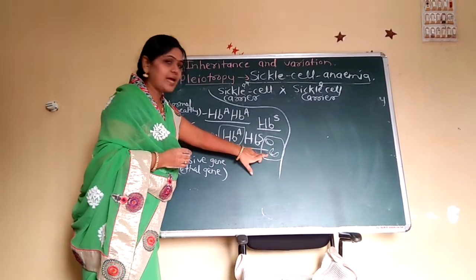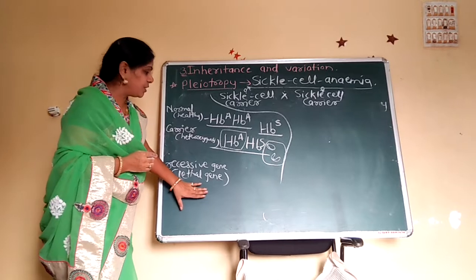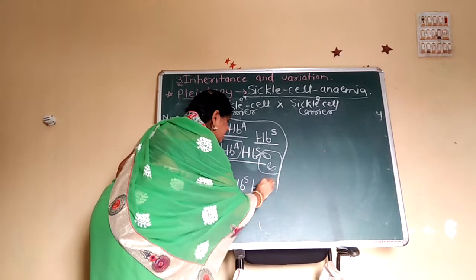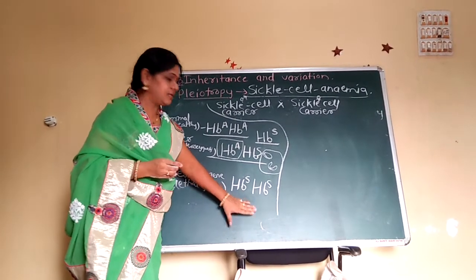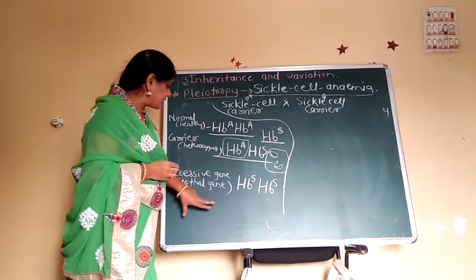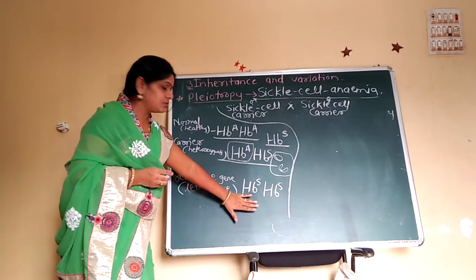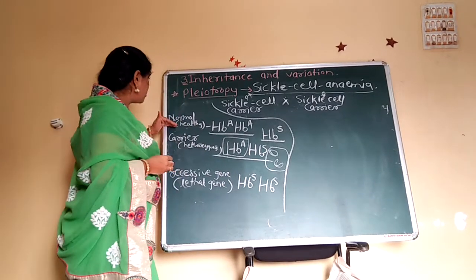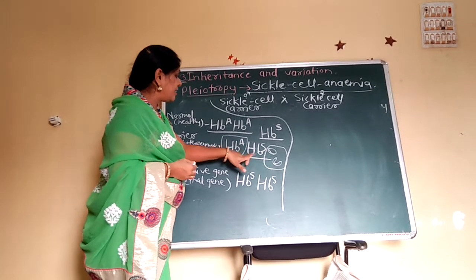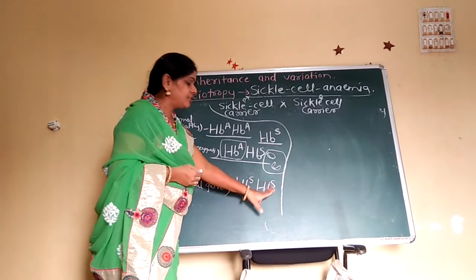The recessive gene HBS is also called a lethal gene, because in the recessive homozygous condition — HBS and HBS — the child is going to die. So: the normal healthy person is HBA HBA, the carrier or heterozygous person is HBA HBS, and the recessive lethal condition is HBS HBS, in which the individual dies.